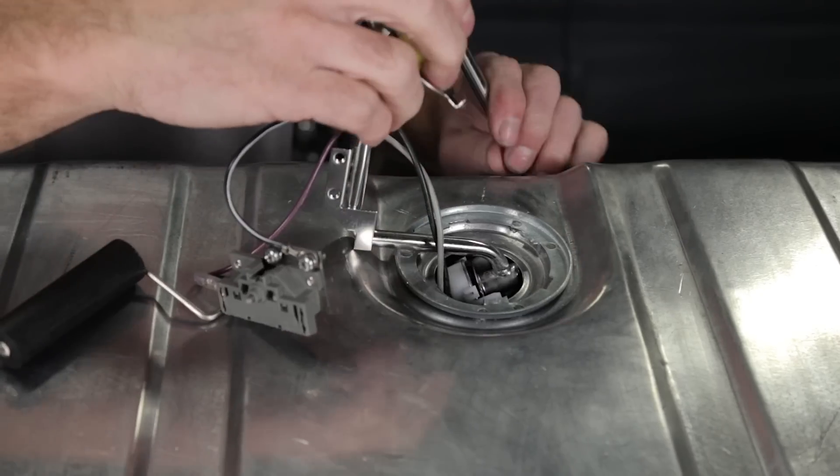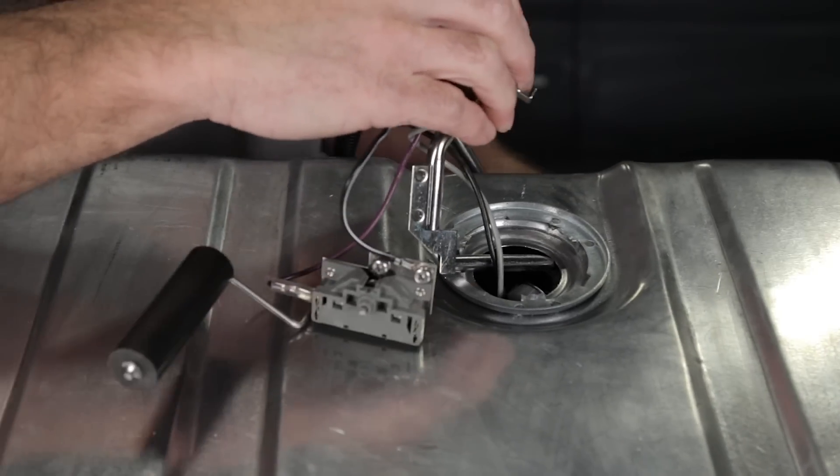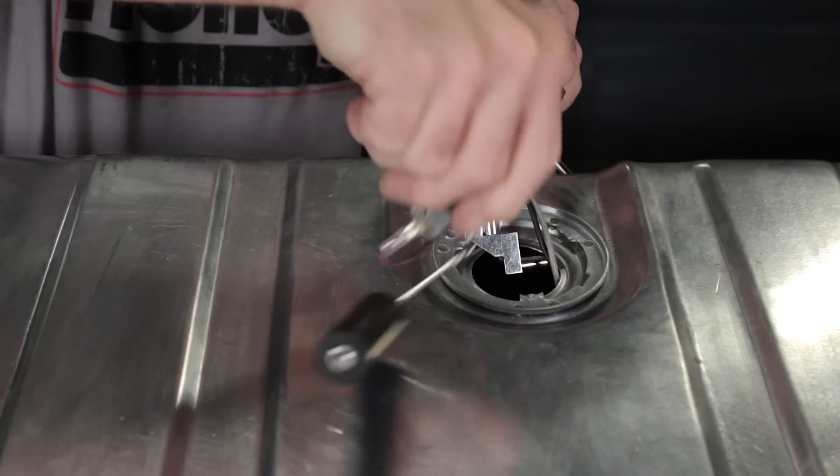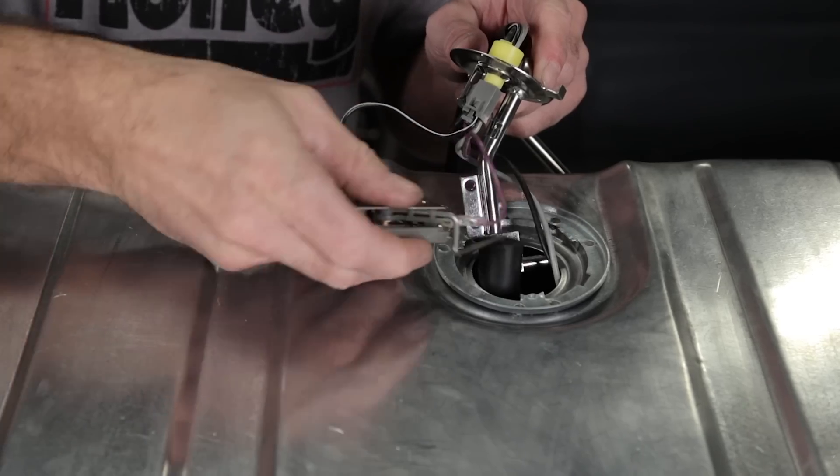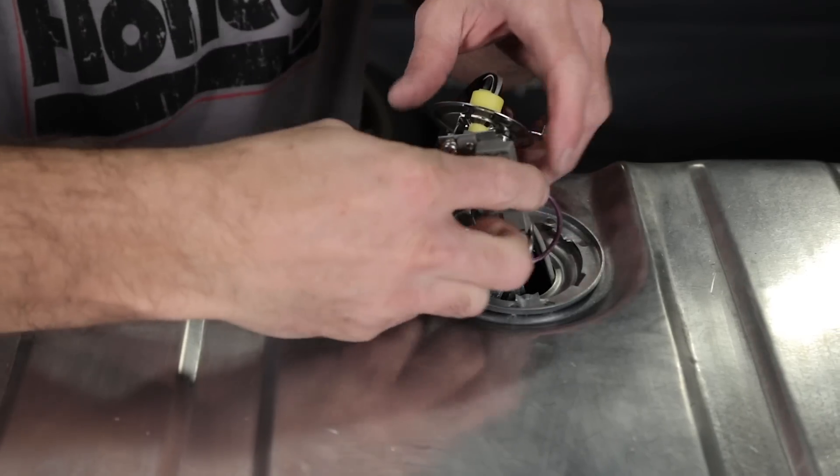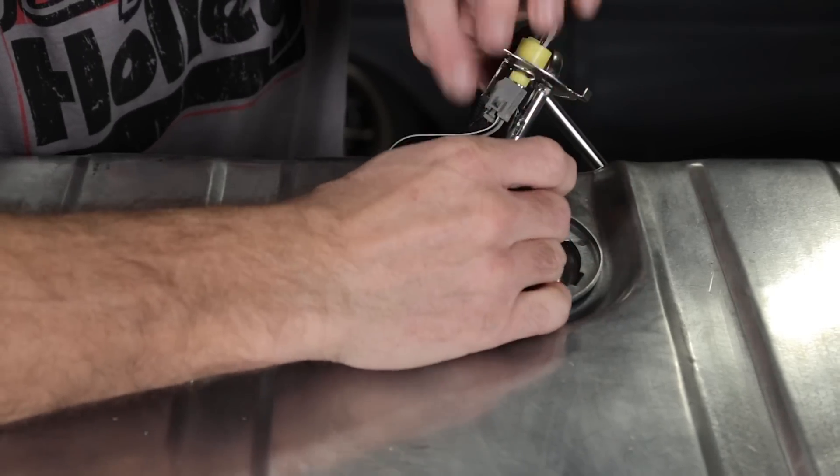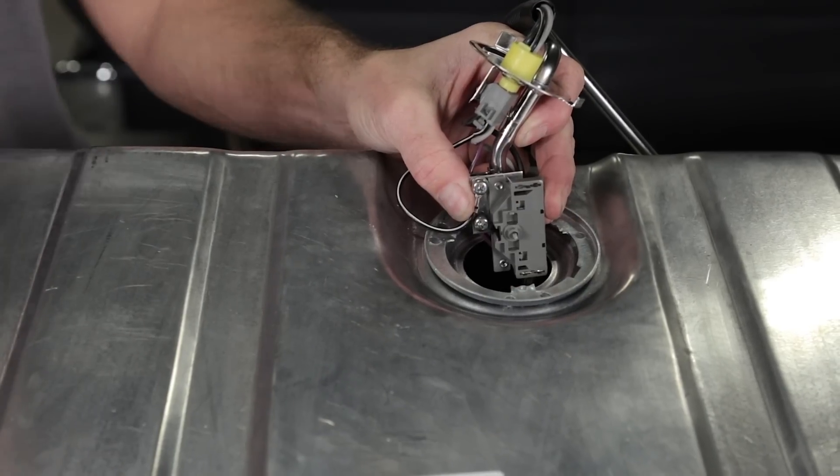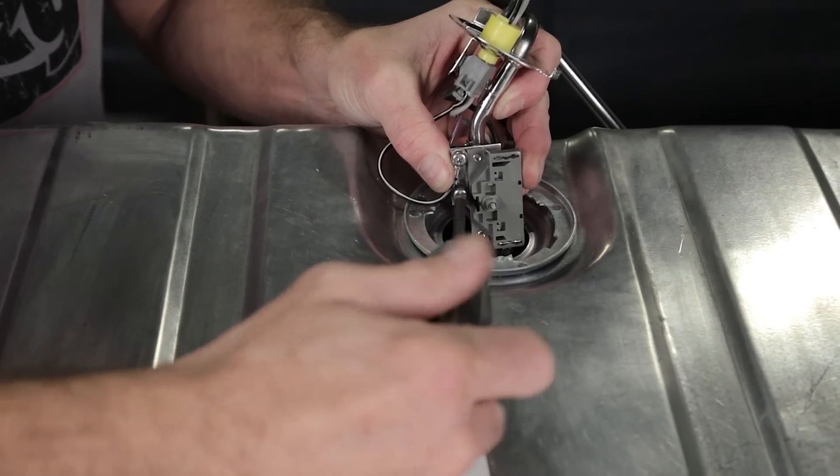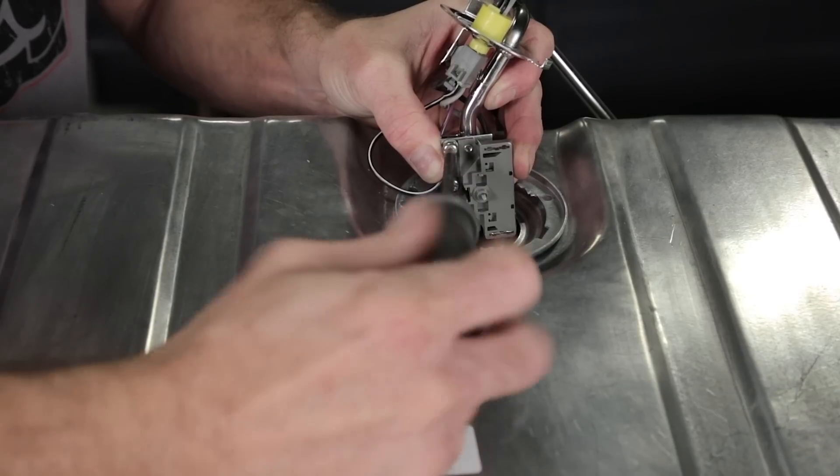Next we need to reinstall the fuel sender. With the two screw holes still visible, insert the float end of your sending unit into the fuel tank and work the sending unit into position. Once the sender is lined up with the holes, re-secure it with the mounting screws we loosened earlier and torque them to 23 inch pounds.